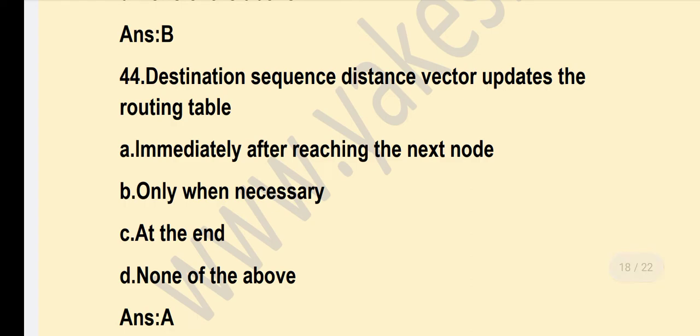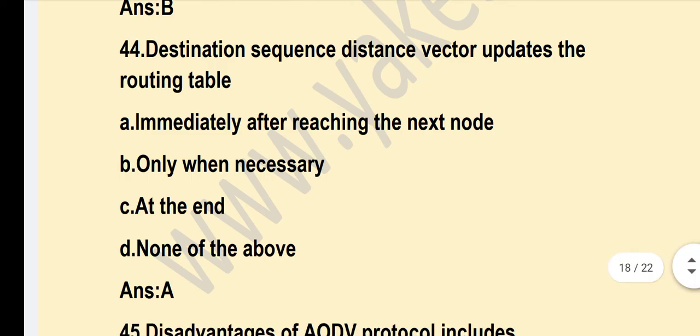Destination Sequence Distance Vector updates: the routing table is updated immediately after reaching the next node. Option A is the correct answer.